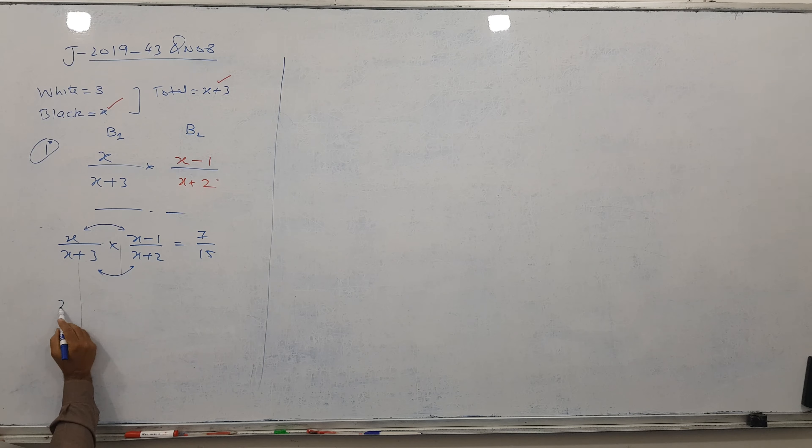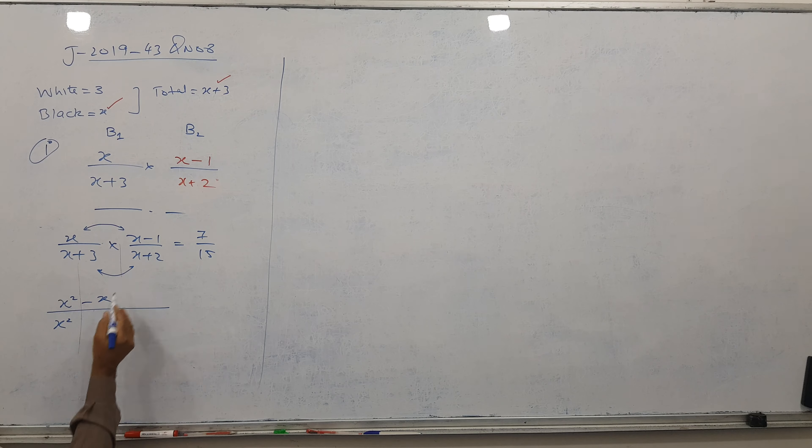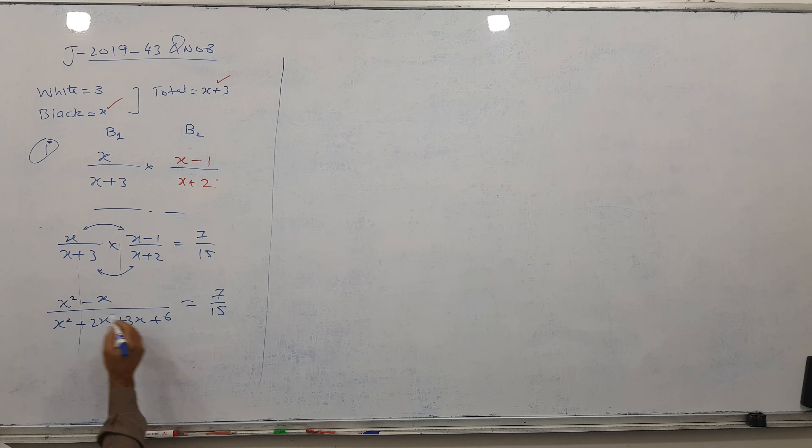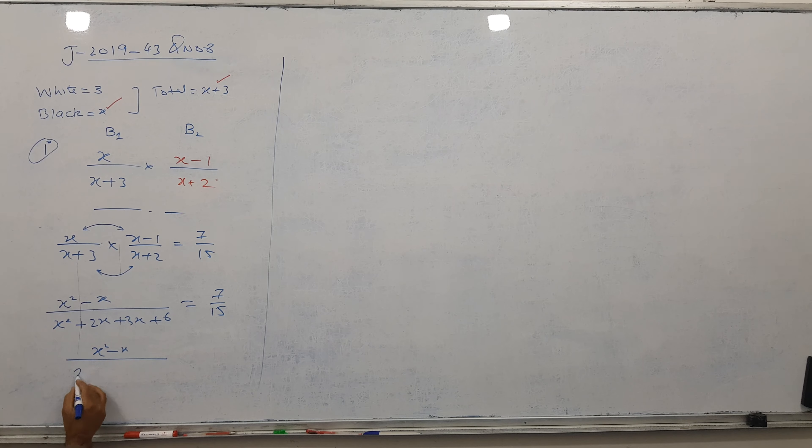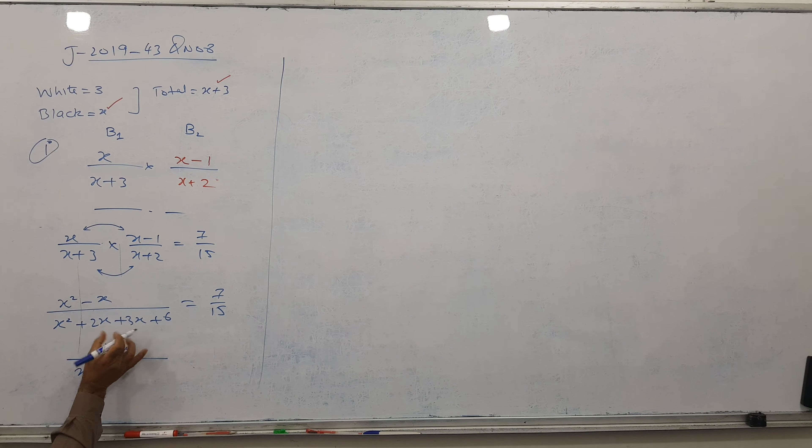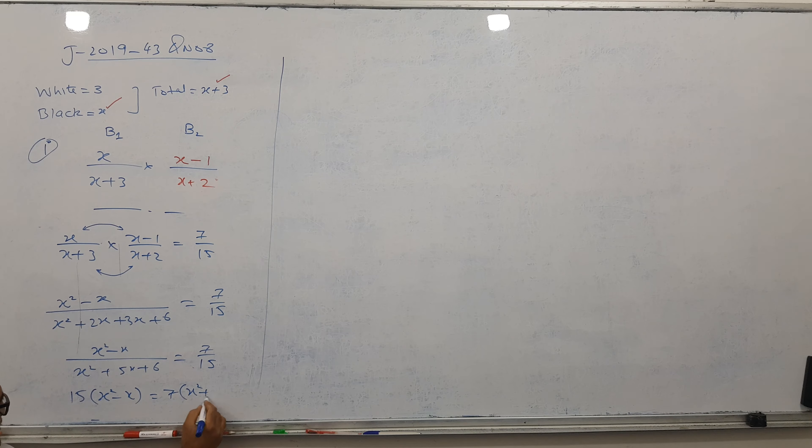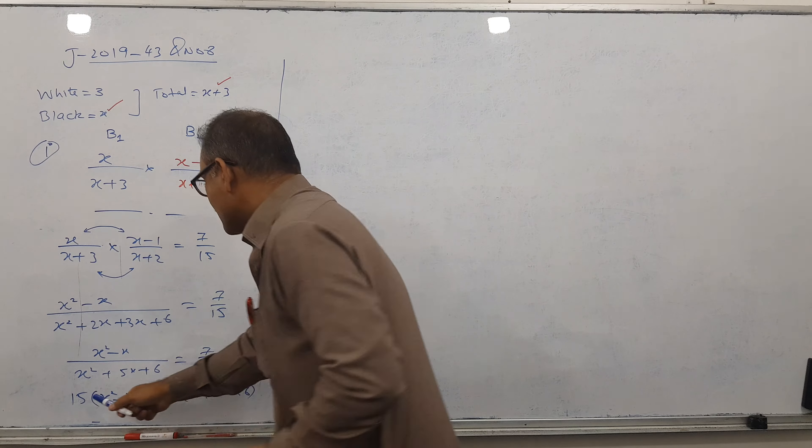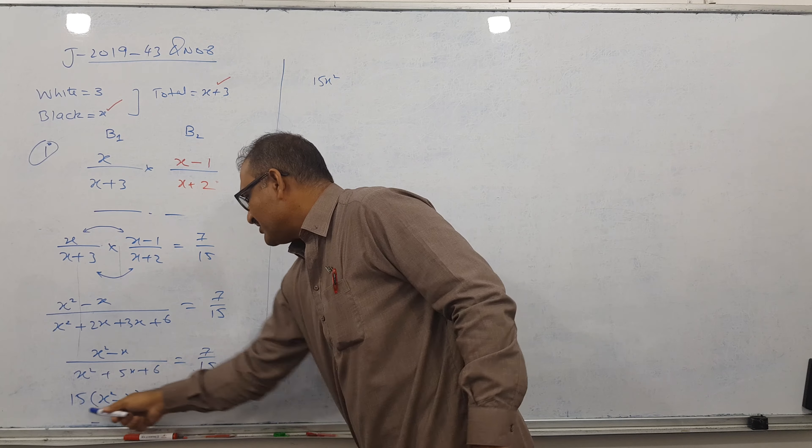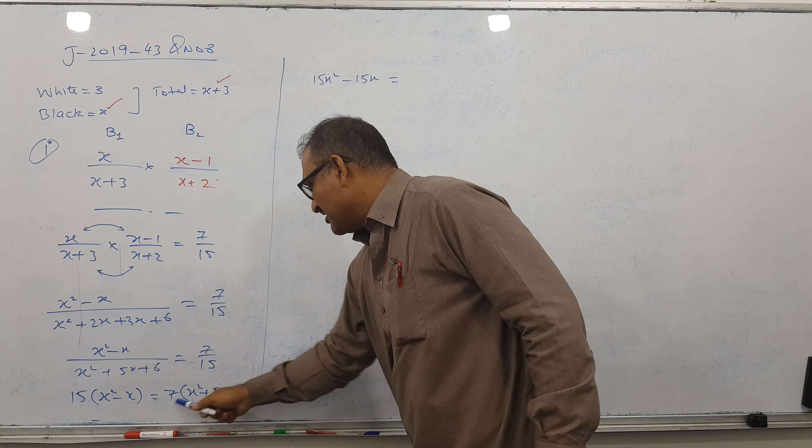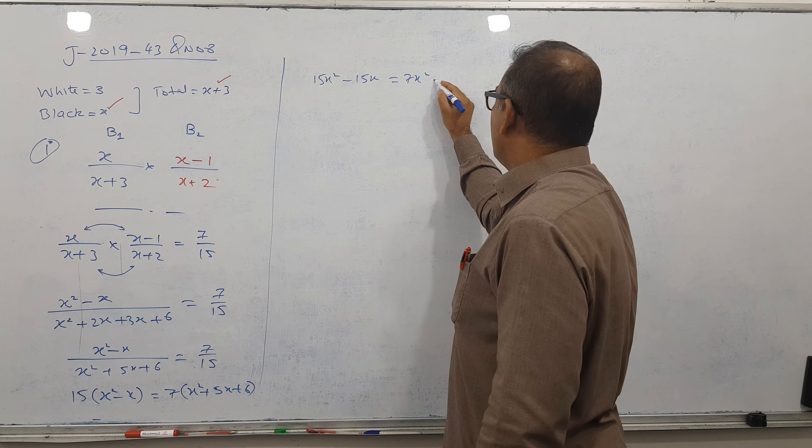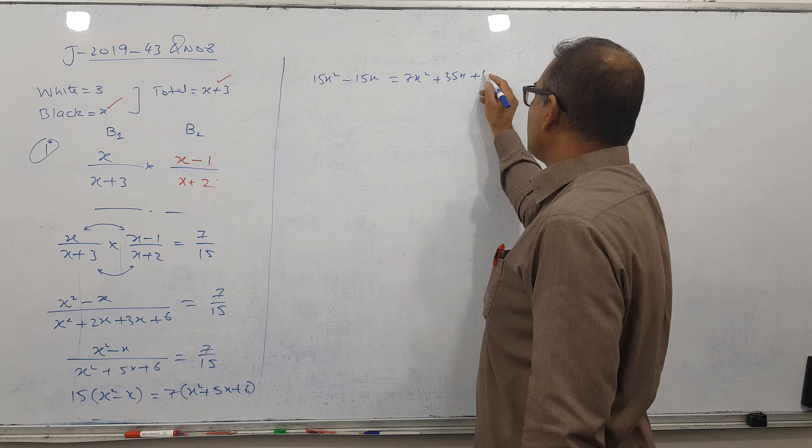Let's multiply. X into X minus 1 gives X squared minus X. X plus 3 into X plus 2 gives X squared plus 2X plus 3X plus 6, which simplifies to X squared plus 5X plus 6. So we have X squared minus X over X squared plus 5X plus 6 equals 7 over 15.